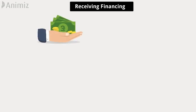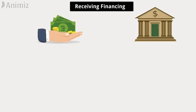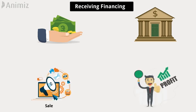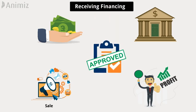Benefit five: receiving financing. If the company needs a loan for a project, the bank will need information about the future, such as sales and profits. The bank needs that data before it will consider approving the loan.